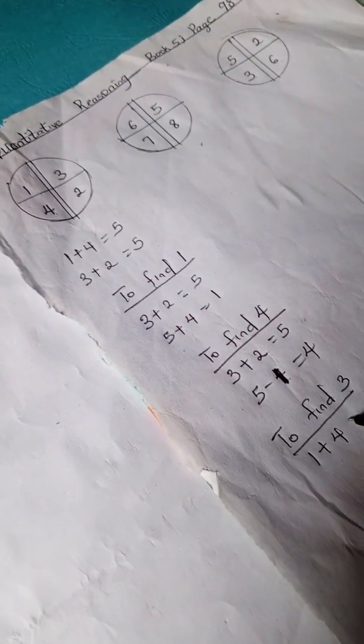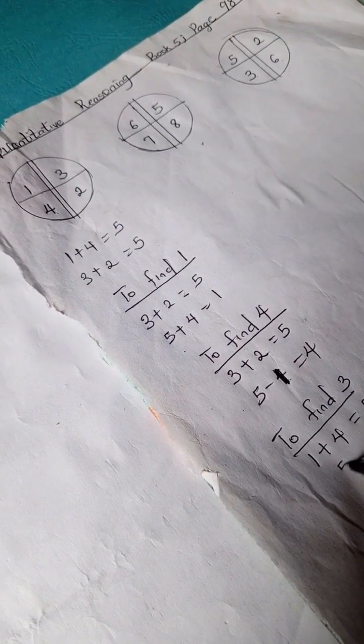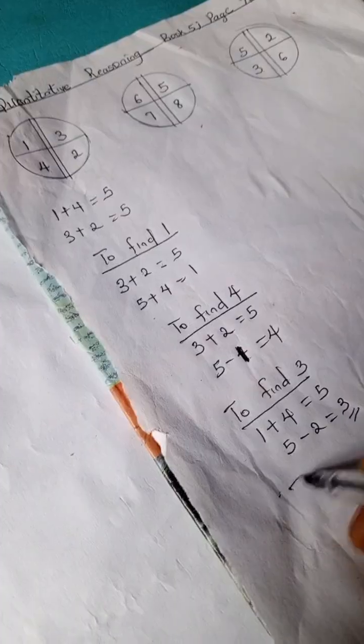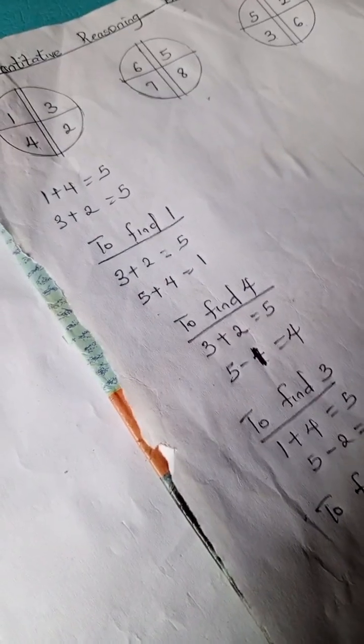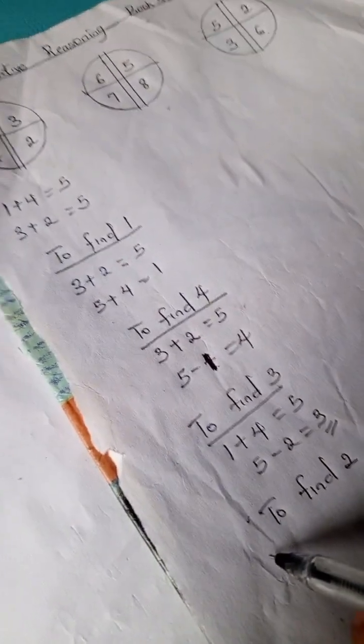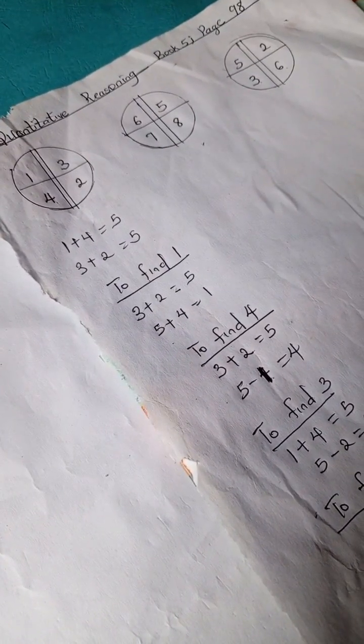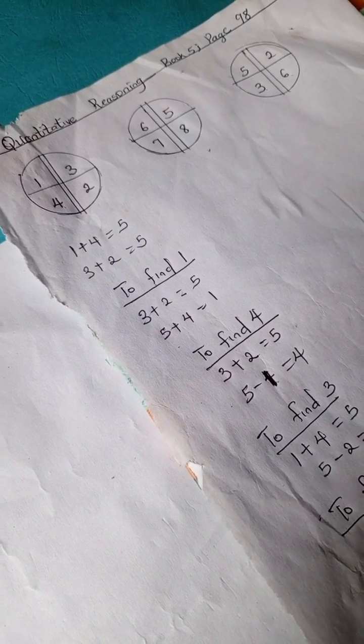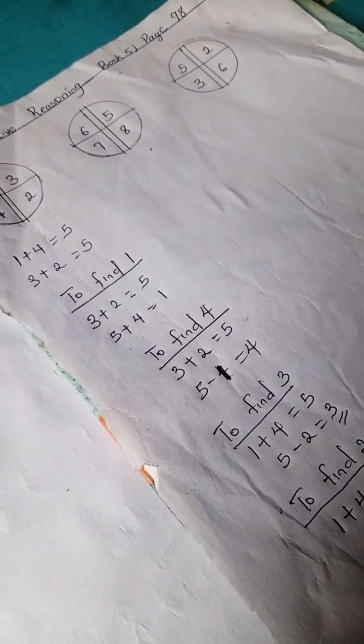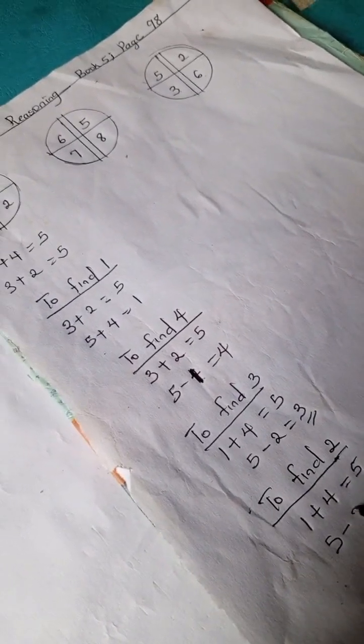To find 2: 1 plus 4 is 5, and 5 minus 3 is 2. So we can also apply the same principle to the other set and see how it goes.